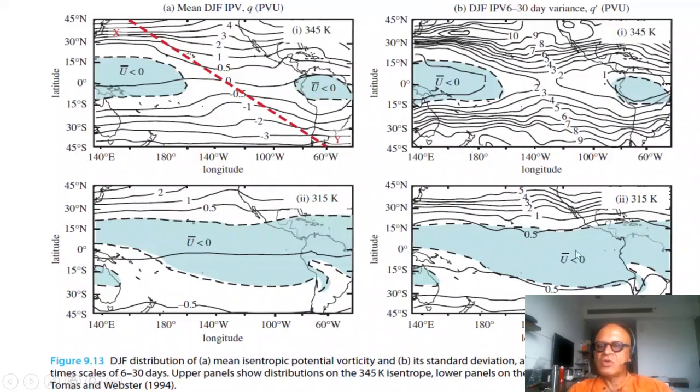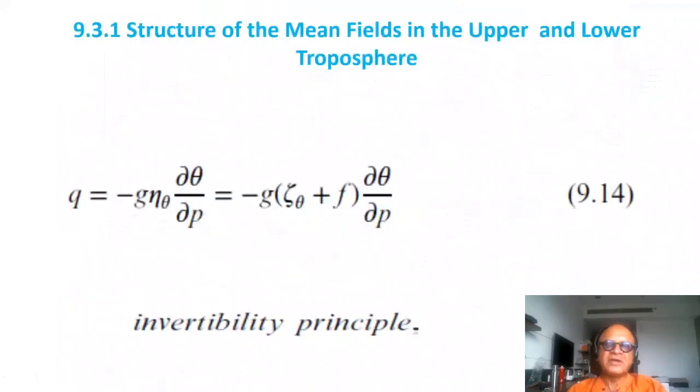At the lower level, the variance is still high at higher latitudes, lower in the lower latitudes, but there is still this gradient of potential vorticity.